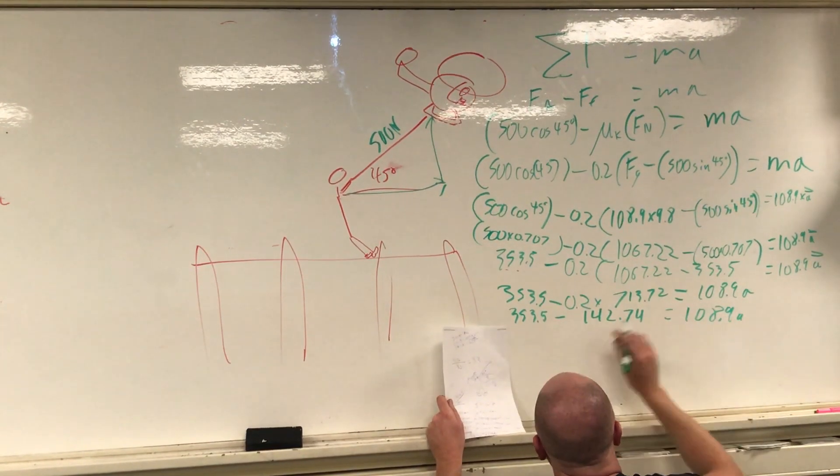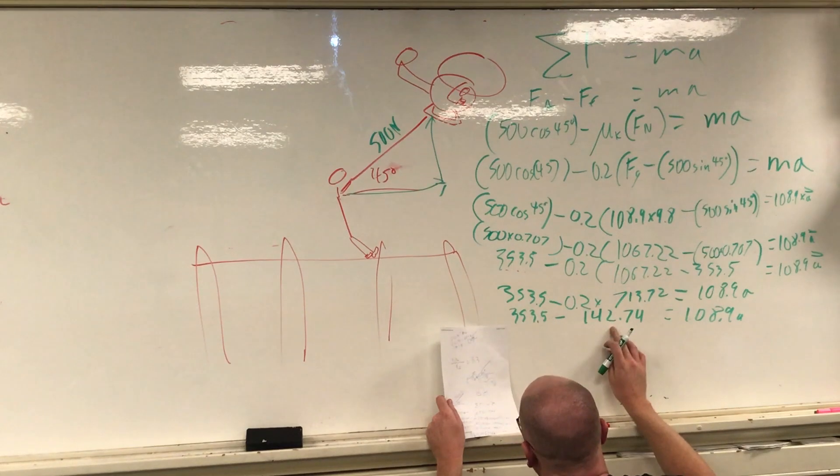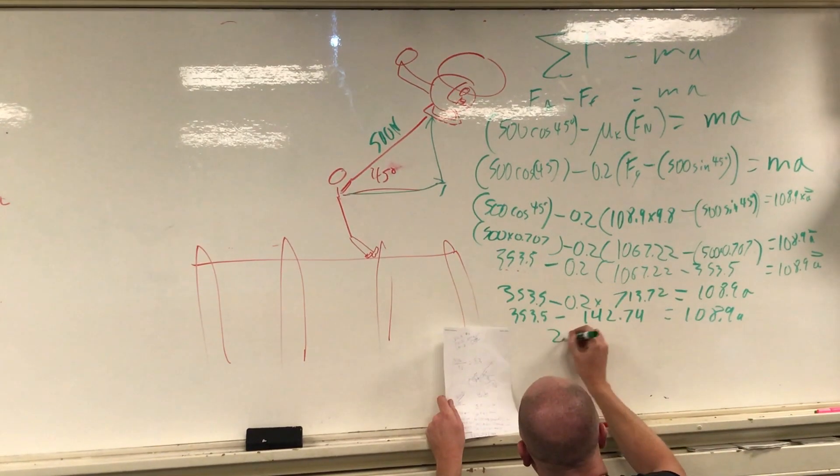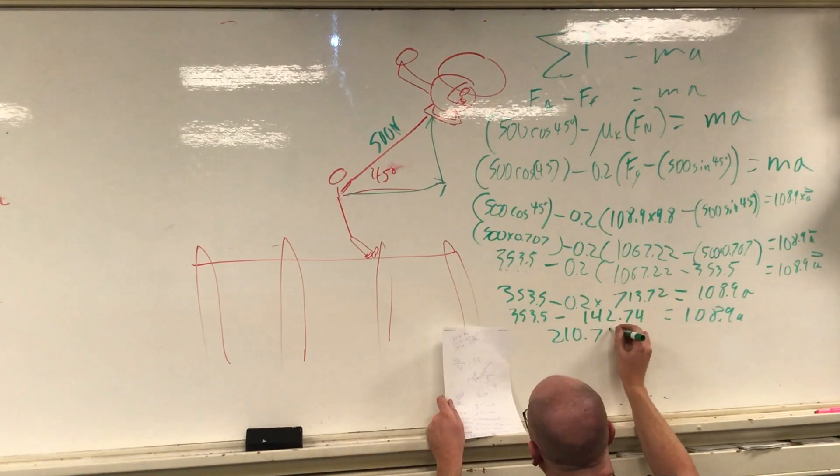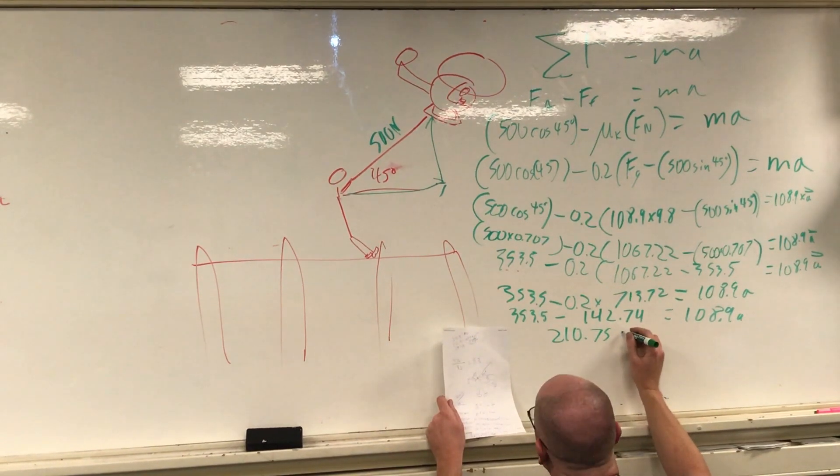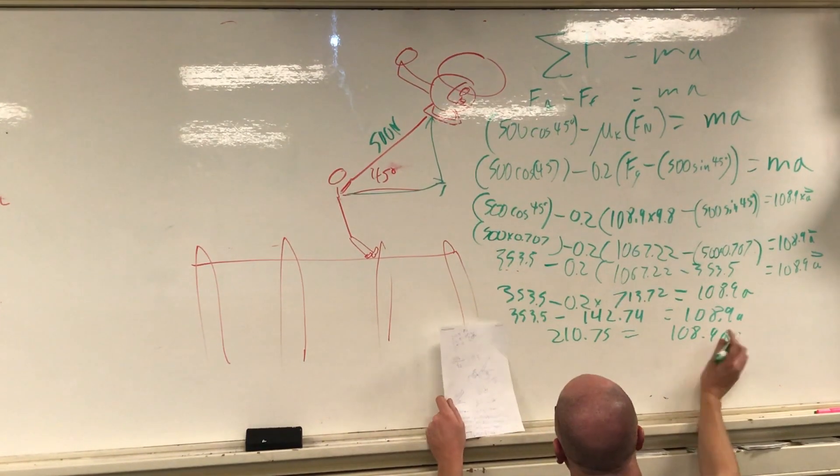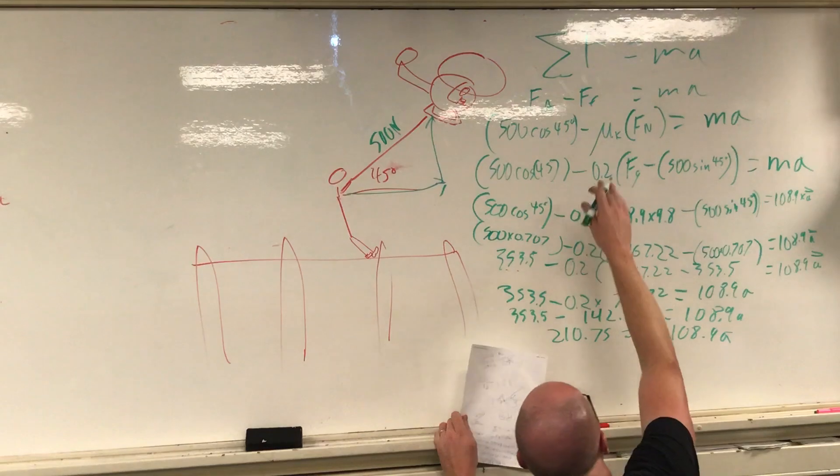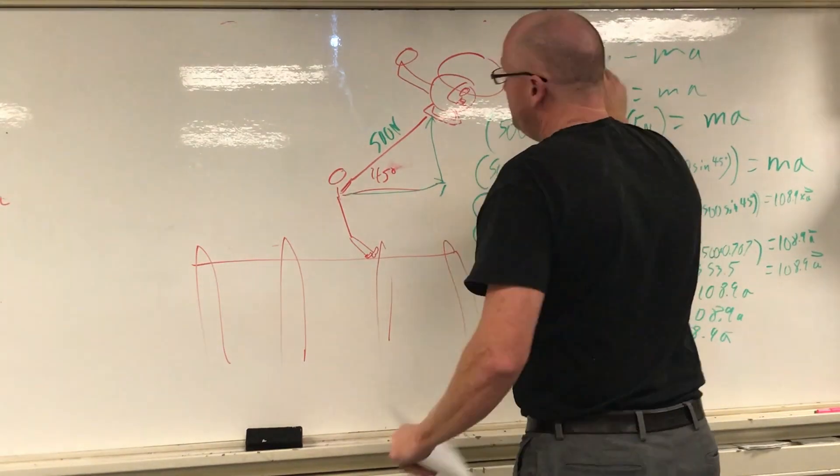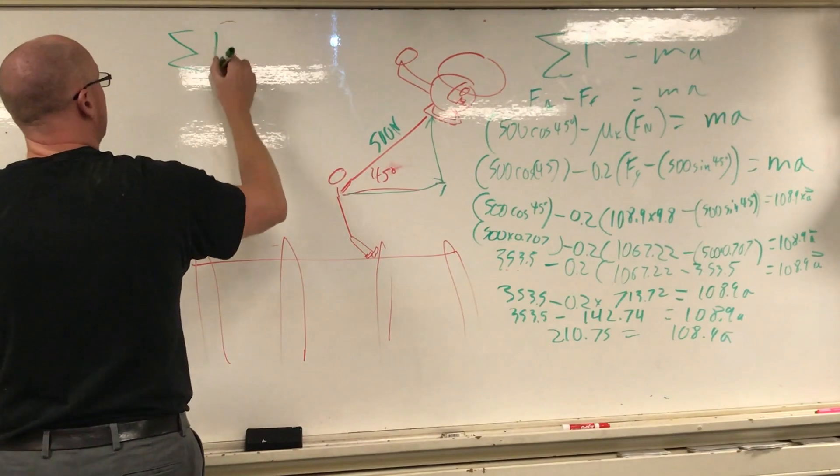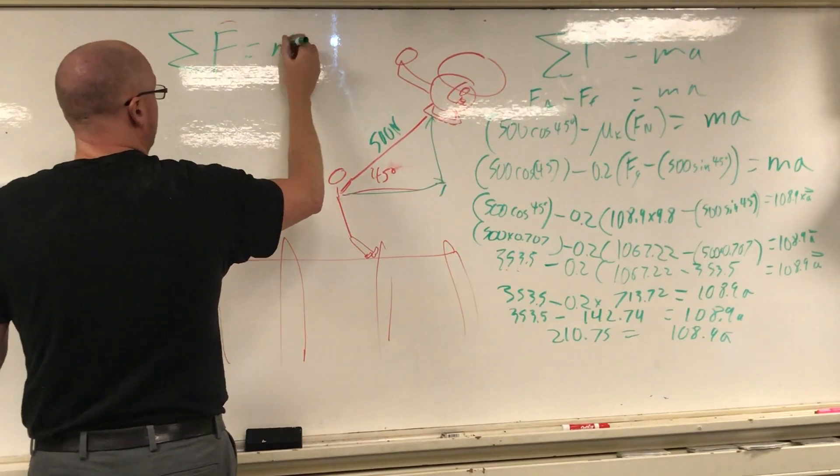And of course the whole thing equals 108.9 times a. So multiply this together and I get 353.5 minus 0.2 times that is 142.74 equals same thing as before. Nothing on the right side has changed yet. Subtracting I get 210.75 is equal to 108.9 times a.